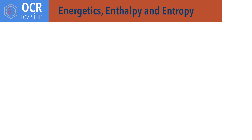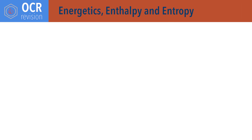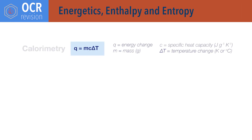For energetics, enthalpy and entropy. Q equals MC delta T, where Q is energy change, M is mass, C is specific heat capacity, and delta T is change in temperature. Note that the units for Q can be either joules or kilojoules, depending on the units given for specific heat capacity.